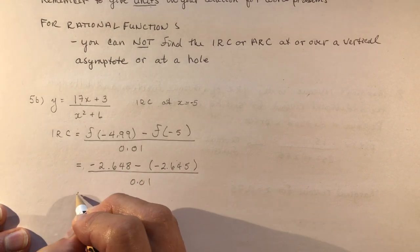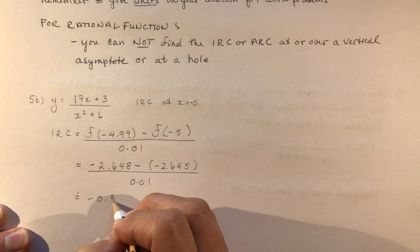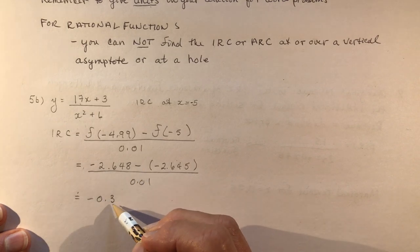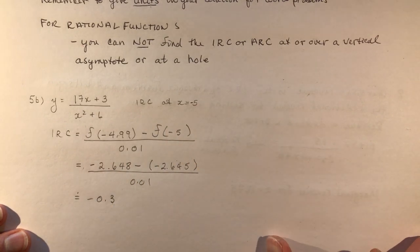So that is the slope of the tangent, an estimated slope of the tangent at the point x equals minus 5 for that function.